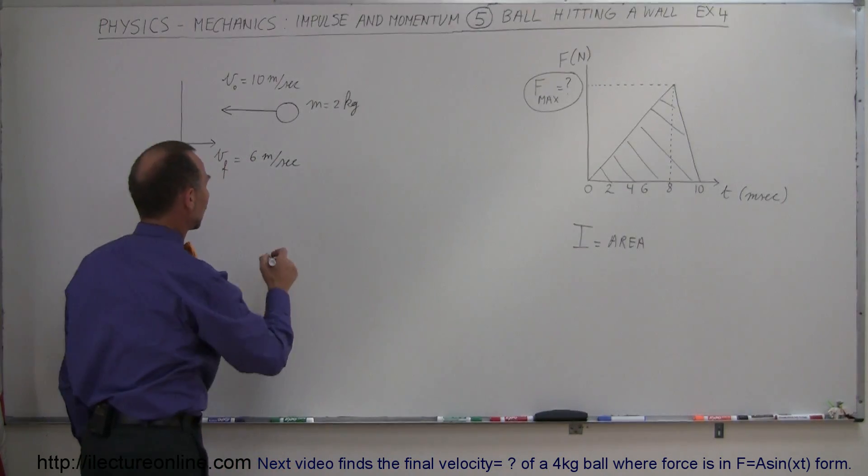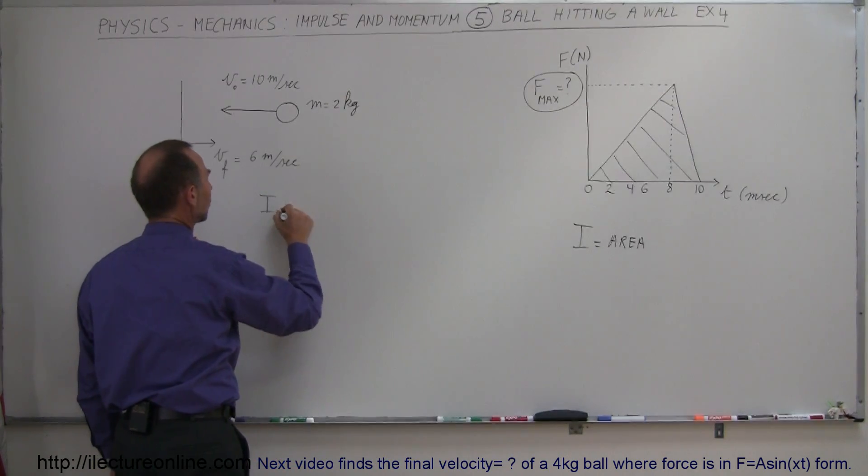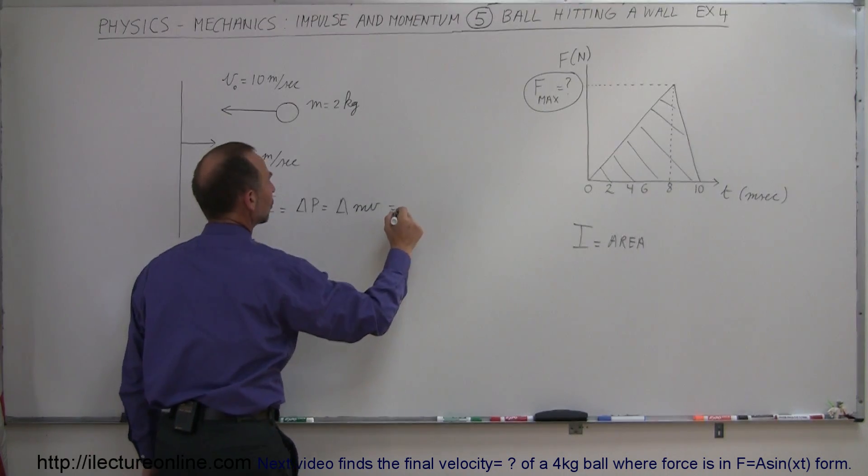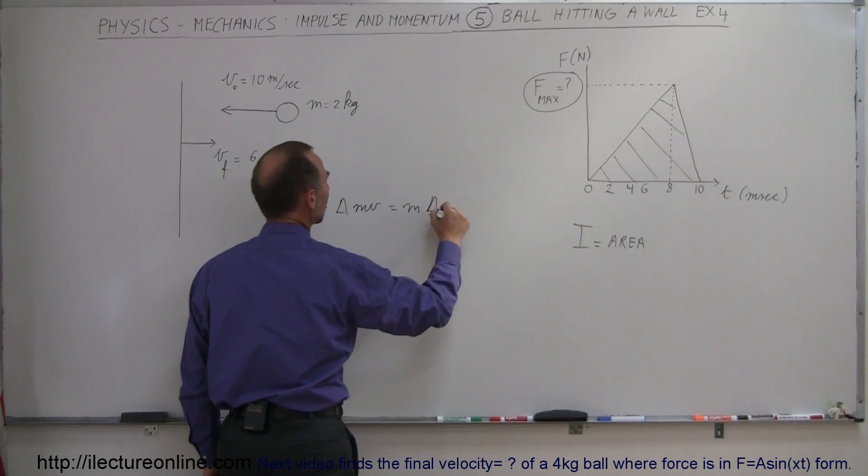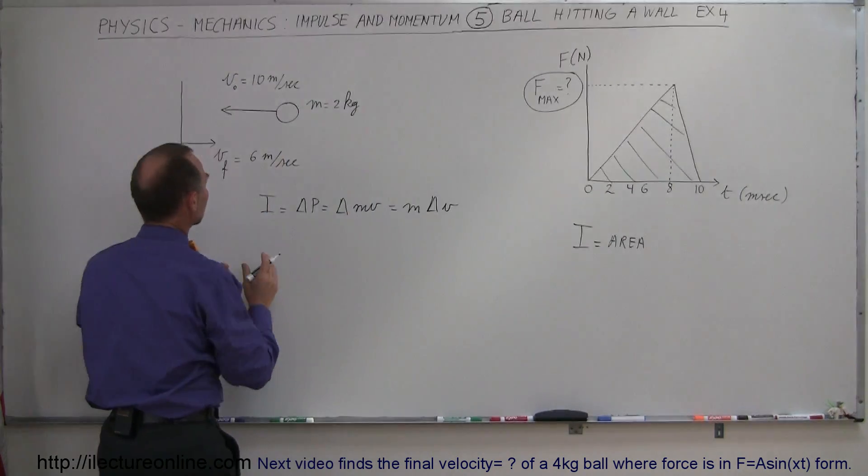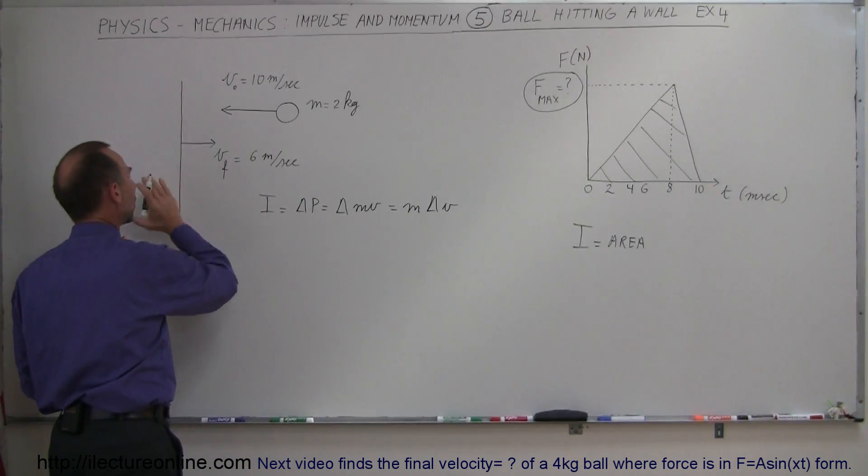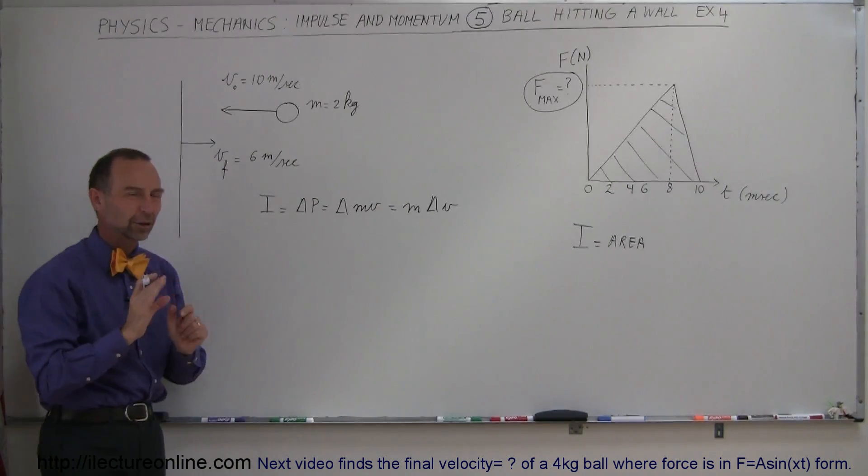Mathematically, we could also say that the impulse is equal to the change in the momentum, which is equal to the change in MV, which is equal to the mass times the change in velocity. And so we're only looking at the ball's momentum, we're not looking at the wall and the Earth's momentum. We're only taking a look at the ball's momentum.